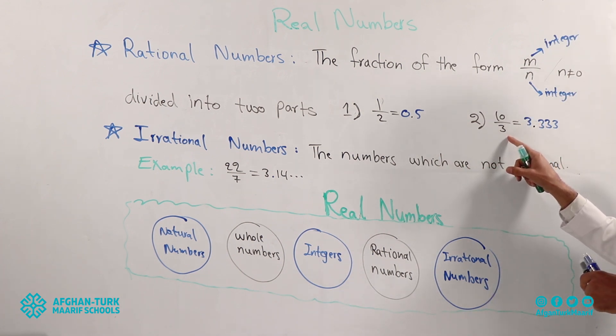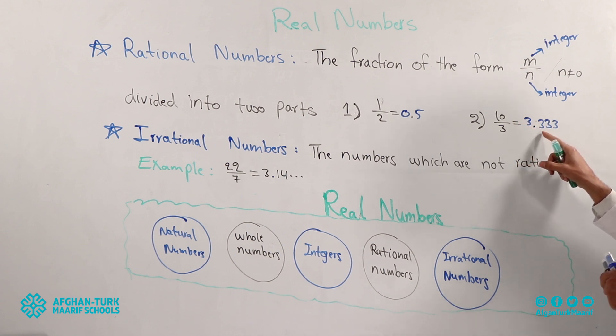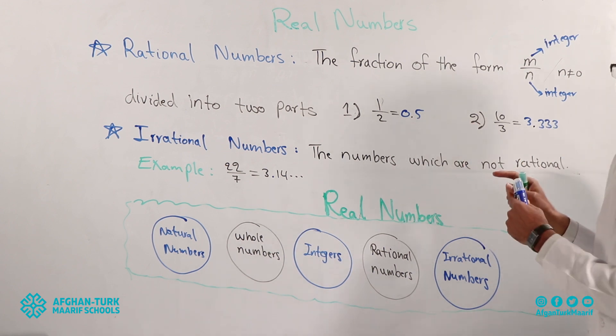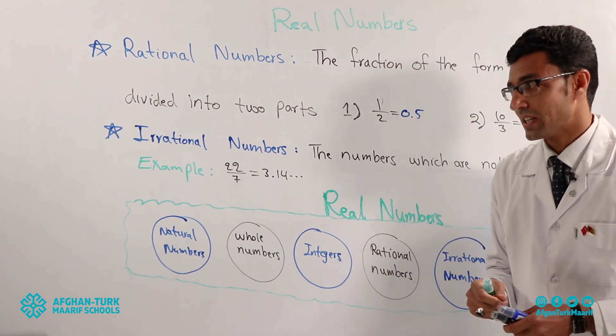And also if the numbers - ten divided by three. Ten divided by three is three point three, three, and three. Because you know that these are all three. We call it as rational number. If you see these two types of number. What do we call? Rational numbers.